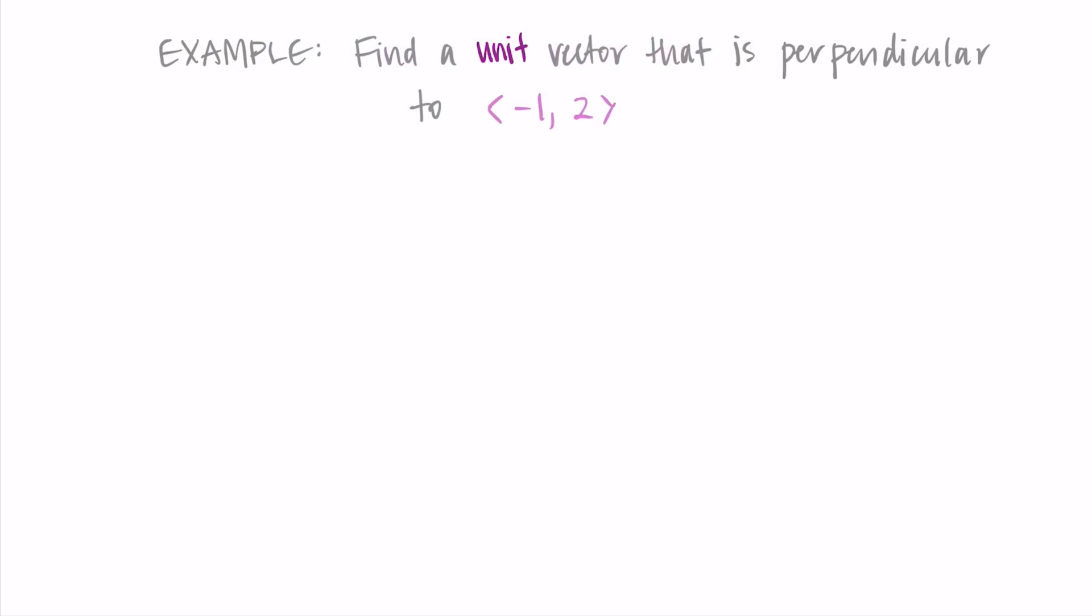As a comment before we start doing this, you can anticipate getting two solutions. So we have a unit vector pointing along the first direction that had the positive components, and we can find a unit vector pointing in the opposite direction. So I'm going to get two solutions to this question.